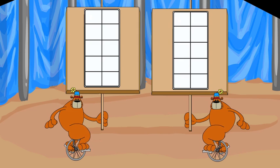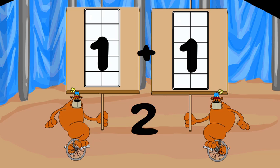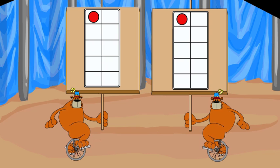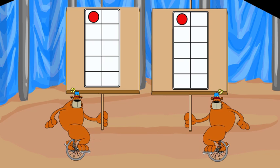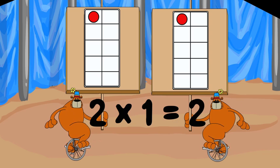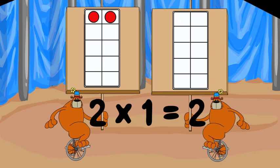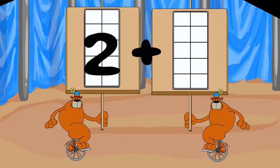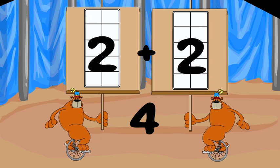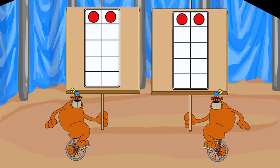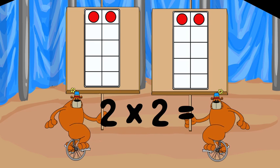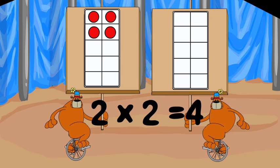You know that 1 plus 1 is 2. That's 2 groups of 1 each. To multiply, just say 2 times 1. That's 2. 2 plus 2 is 4. So what's 2 times 2? 2 times 2 is 4.